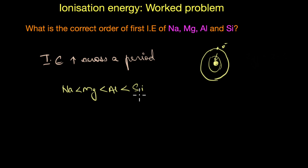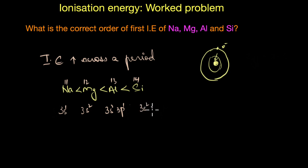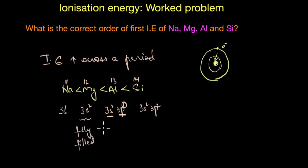Let's look at the electronic configurations. Their atomic numbers are 11, 12, 13, and 14, with valence electrons 3s1, 3s2, 3s2 3p1, and 3s2 3p2 respectively. In aluminium, the outermost electron is in the 3p orbital, whereas magnesium has a fully filled 3s2 subshell. Fully filled subshells are much more stable than partially filled ones, so more energy is needed to remove electrons from magnesium's 3s orbital.